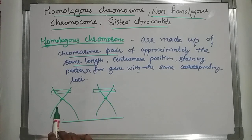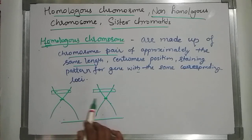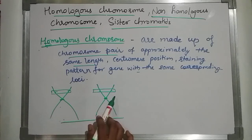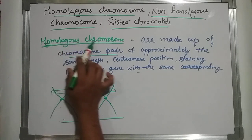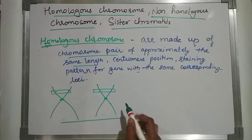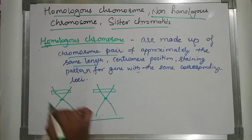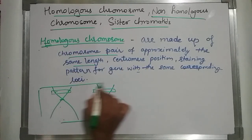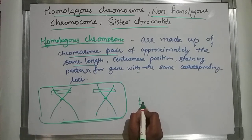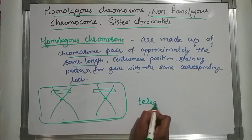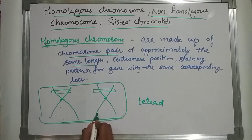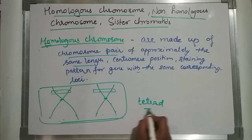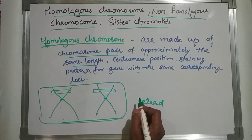This state can be called a tetrad, meaning four — one, two, three, four chromatids are there. That's why it is called a tetrad.